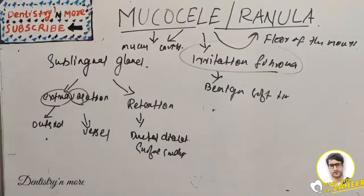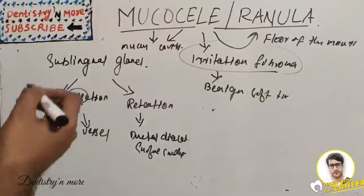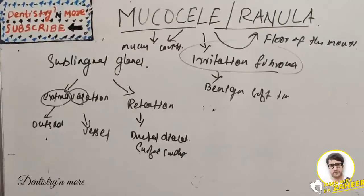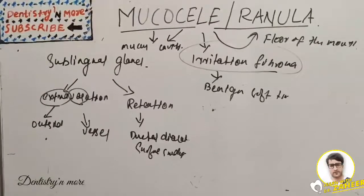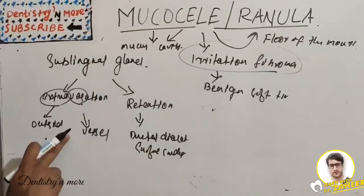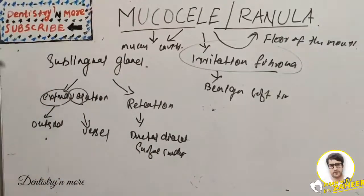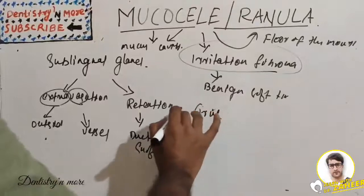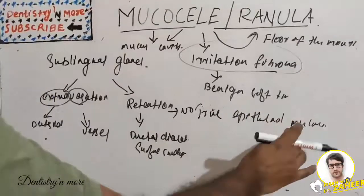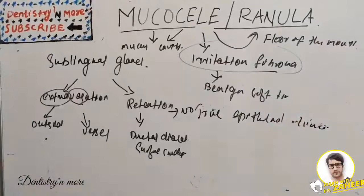A mucocele consists of a circumscribed cavity in the connective tissue and submucosa, producing an obvious dome-shaped elevation in the mucosa. The majority of mucoceles result from extravasation of fluid into the surrounding tissue after a traumatic break in the continuity of the duct, and it does not have a true epithelial lining.